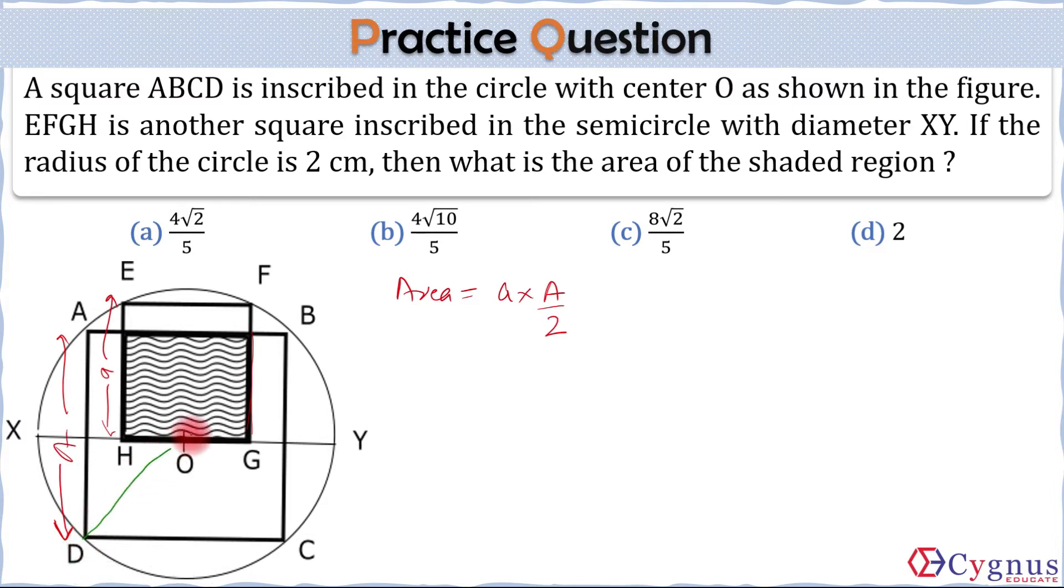So if we join B and D, BD is the diameter of the circle. BD is equal to twice of the radius, which is two centimeters. So BD is equal to four centimeters. And BD is also the diagonal of the square ABCD. Now we know diagonal of a square is root two times the side of the square. So from here we have capital A is equal to two into root two. So we have calculated capital A is two into root two.